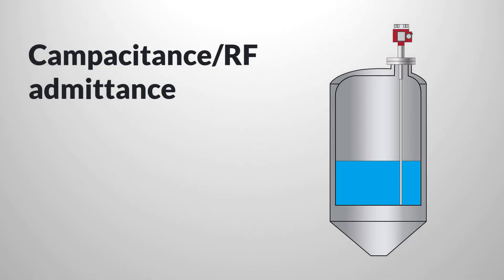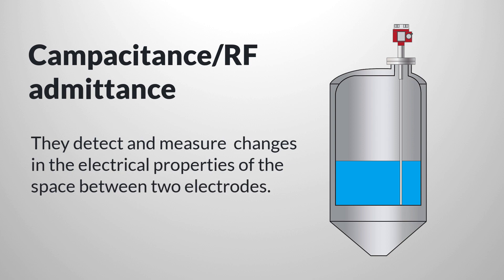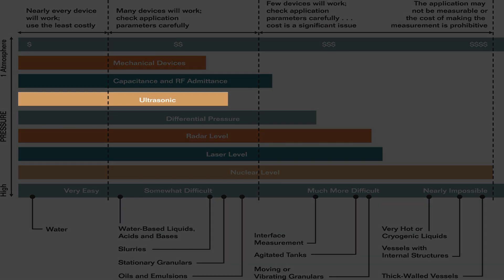Capacitance and admittance gauges can cover a broad range of applications at a reasonable cost. Capacitance and RF admittance devices include both point-level switches and continuous gauges. They detect and measure changes in the electrical properties of the space between two electrodes. In the common application shown here, the electrodes are a long probe and the tank itself.